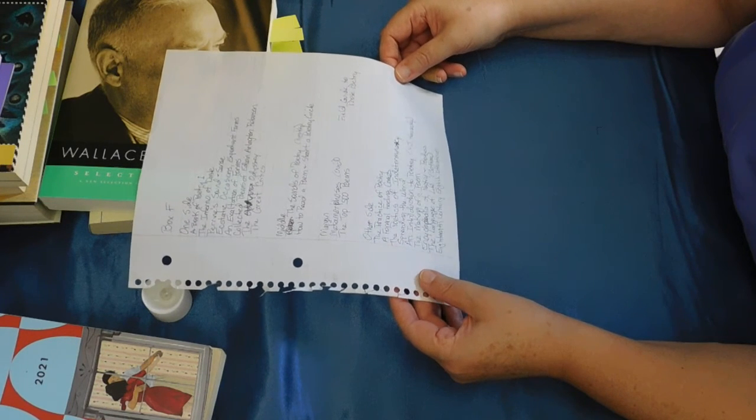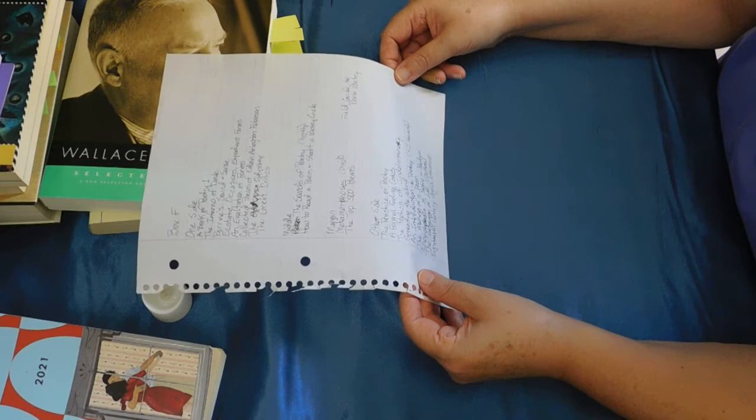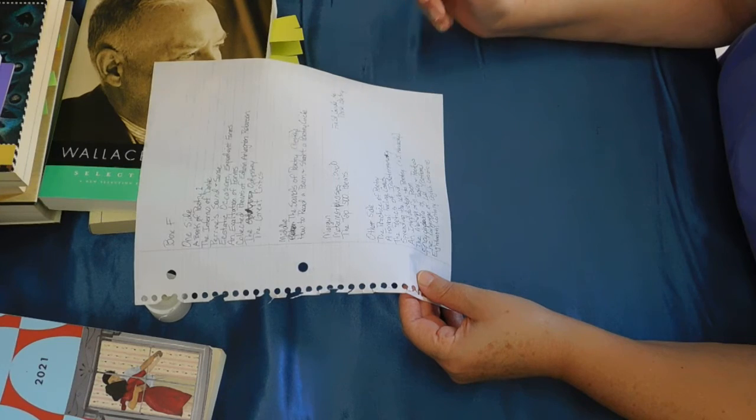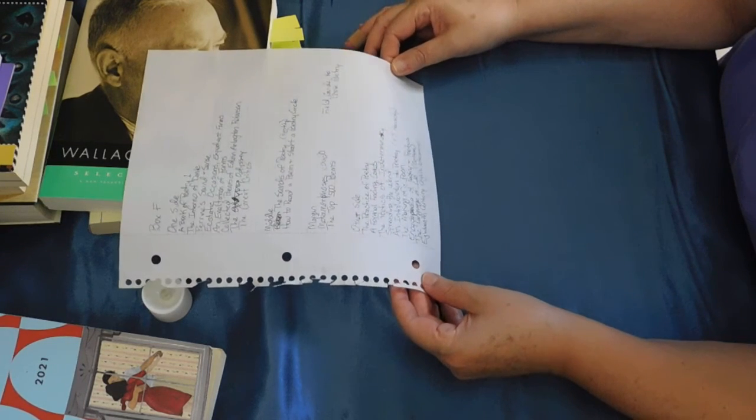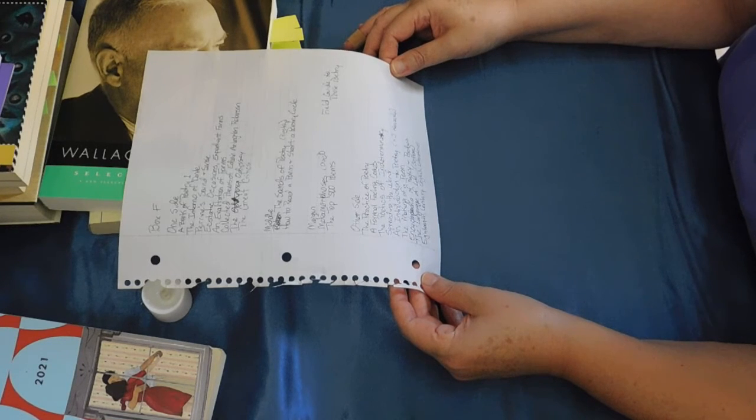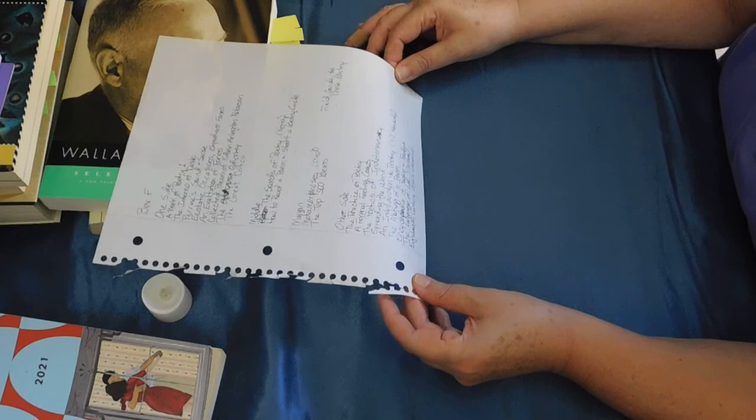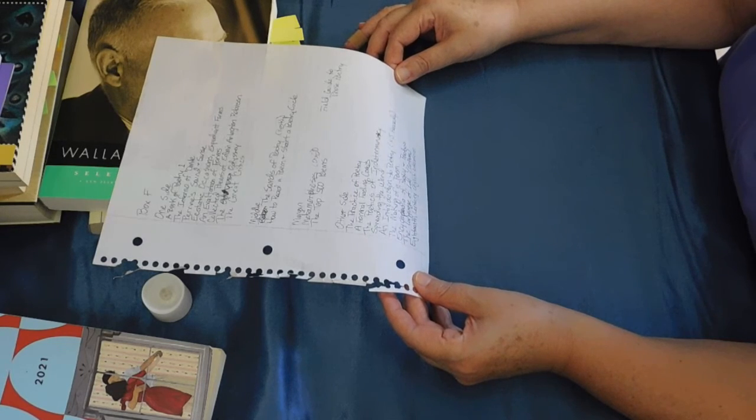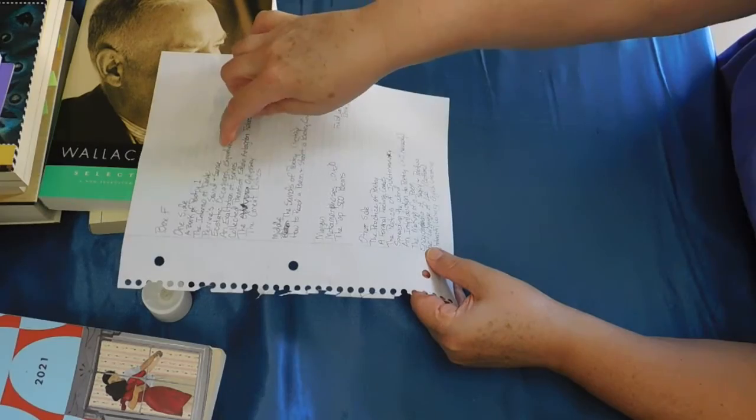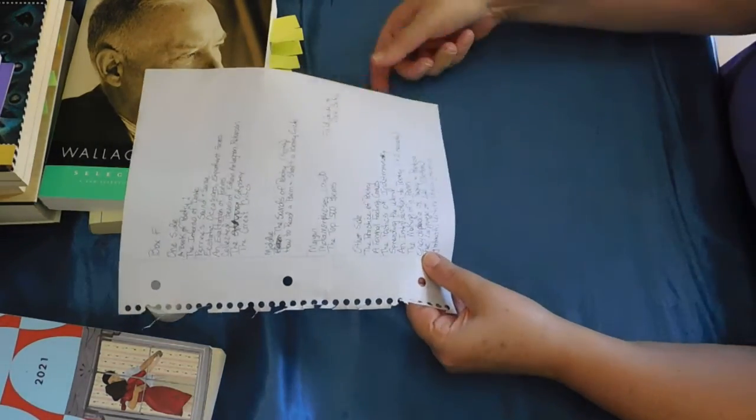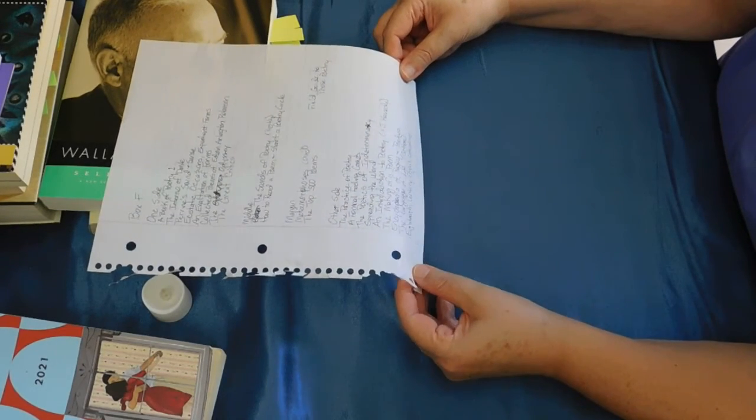The Practice of Poetry, A Formal Feeling Comes, which is a good anthology that features formal poetry, edited, I believe, by Annie Finch. The Poetics of Indeterminacy, Spreading the Words. All of these are more about poetry than they are actual poetry. An Introduction to Poetry by X.J. Kennedy. The Making of a Poem. I think that's like these other ones up here that it's just where there's a poem presented and then the poet talks about how it came to be.